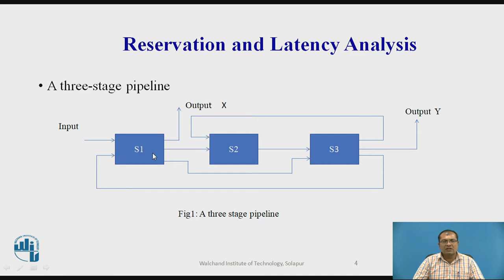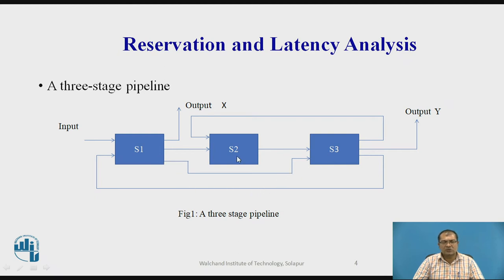The streamline connection connects stage S1 to its immediate next stage, S2 to S3, S3 to S4, and so on. The second type of connection is the feed forward connection. Here, S1 is connected to S3, skipping S2, which is why it is called a feed forward connection.